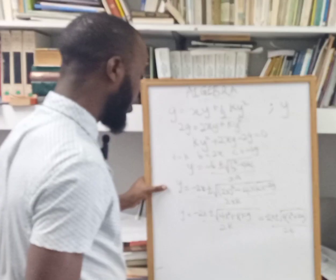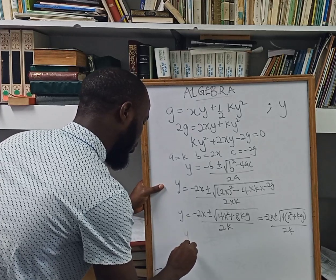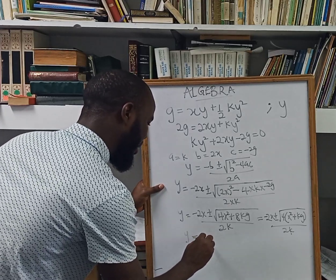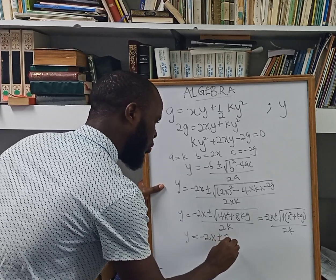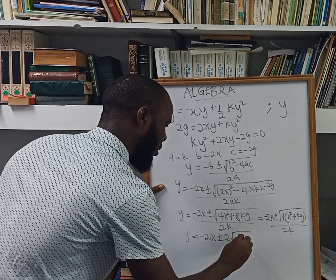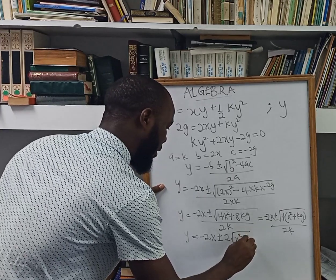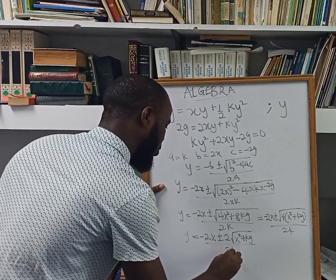So going forward, the square root of 4 is going to be 2. So this can be written as negative 2x plus or minus 2 root x squared plus 2kg, all over 2k.